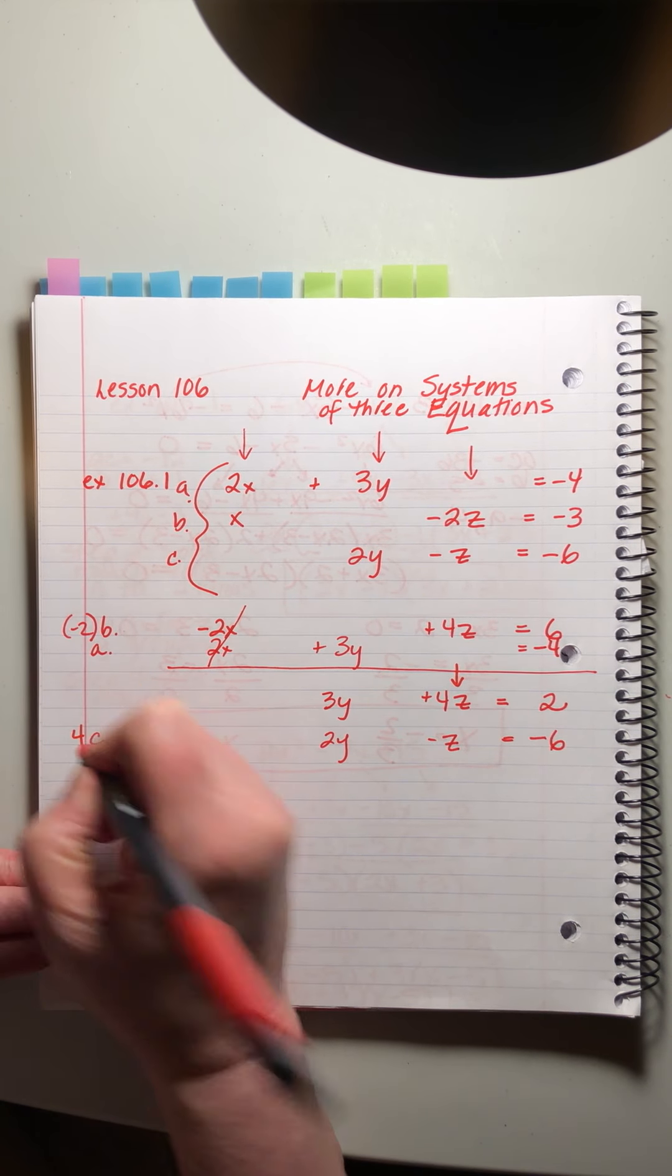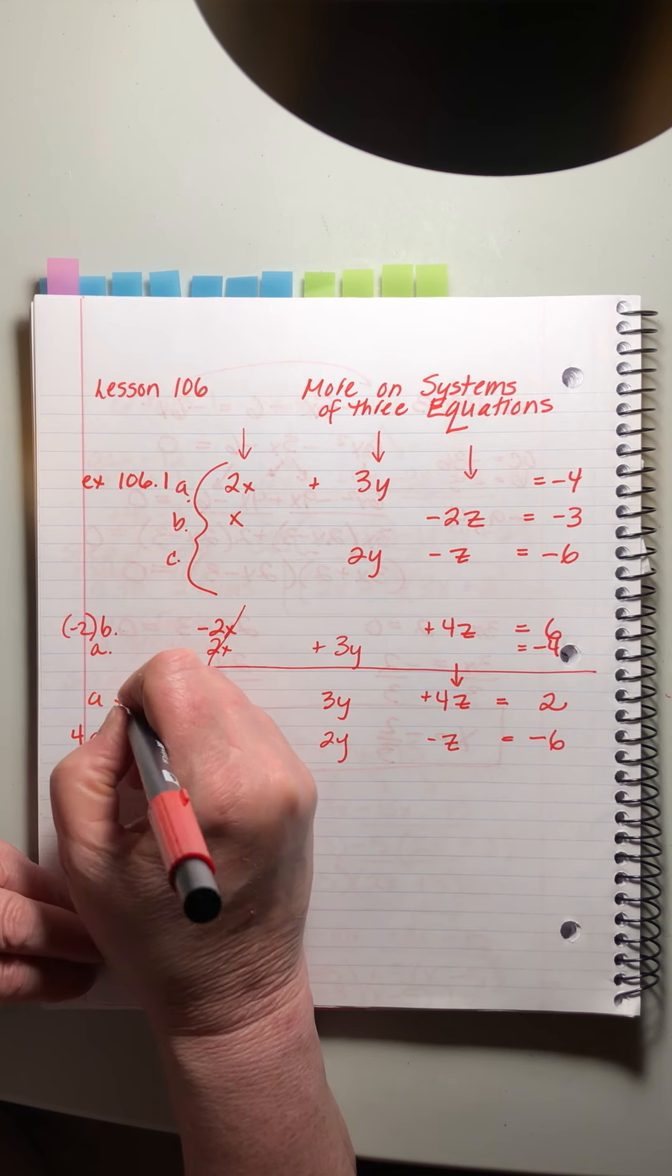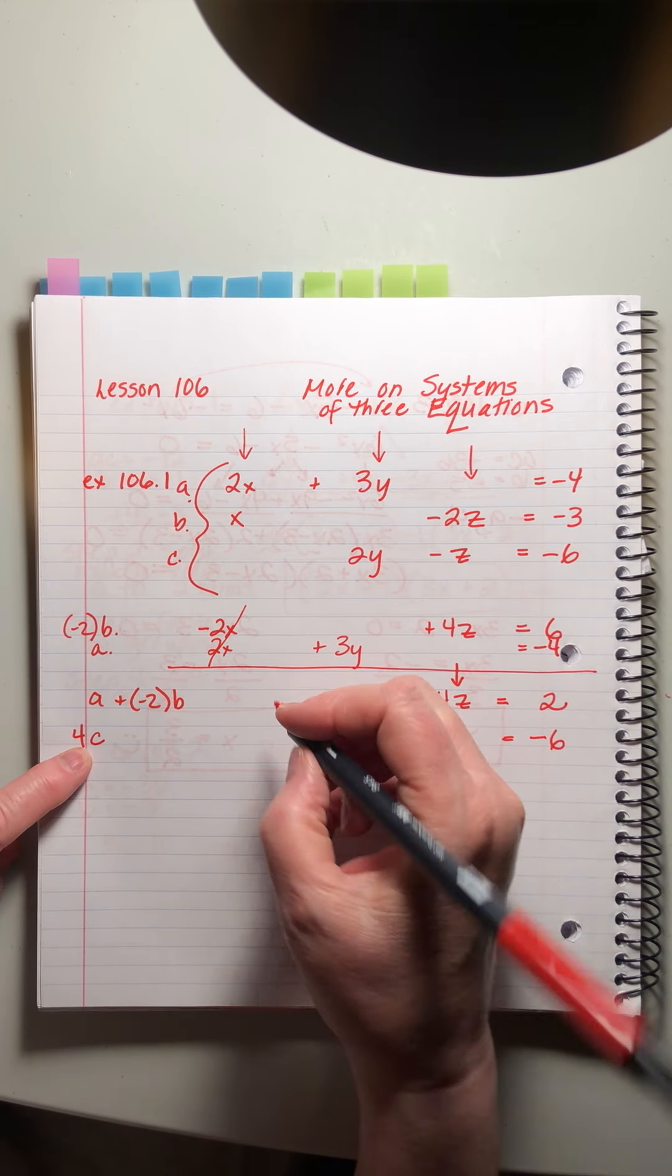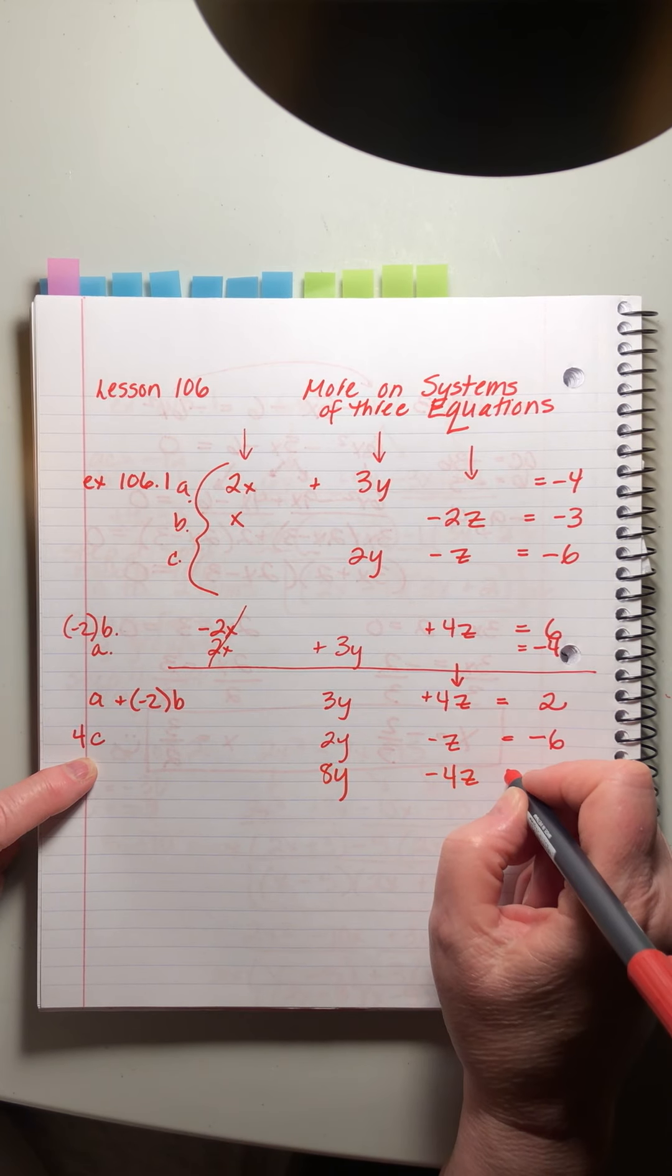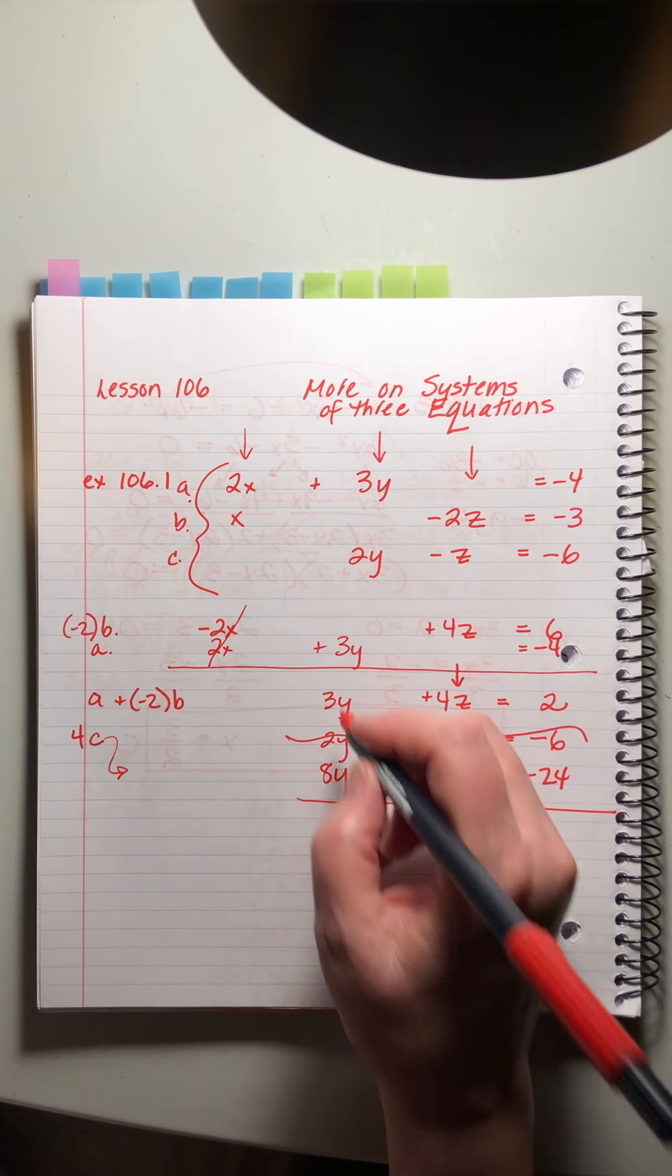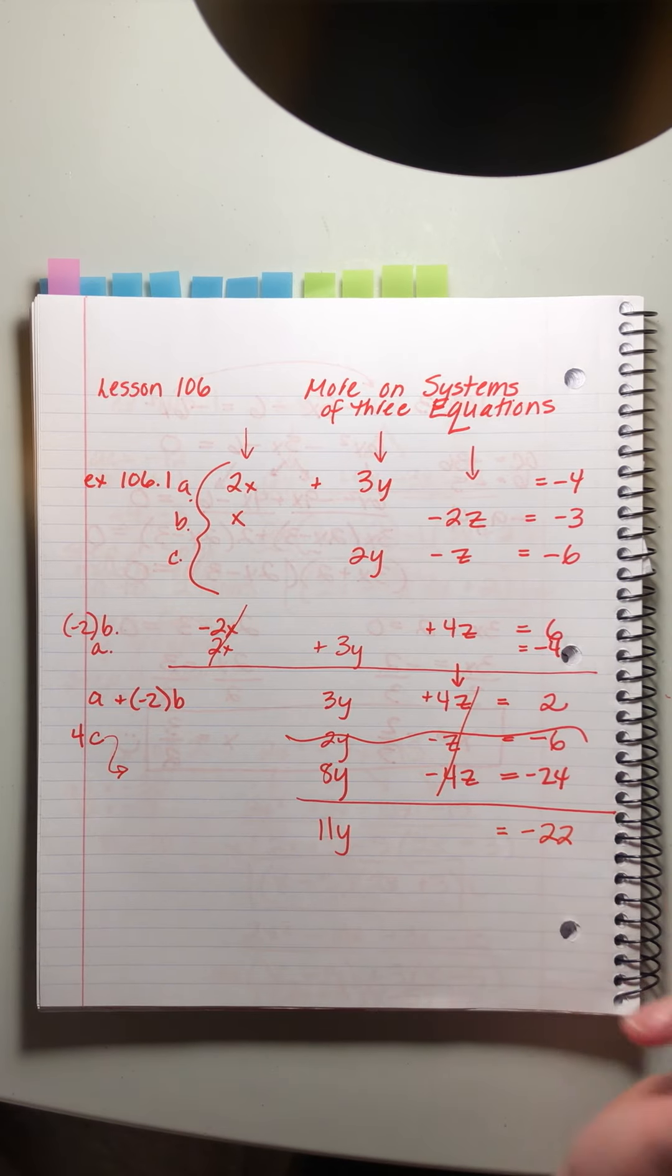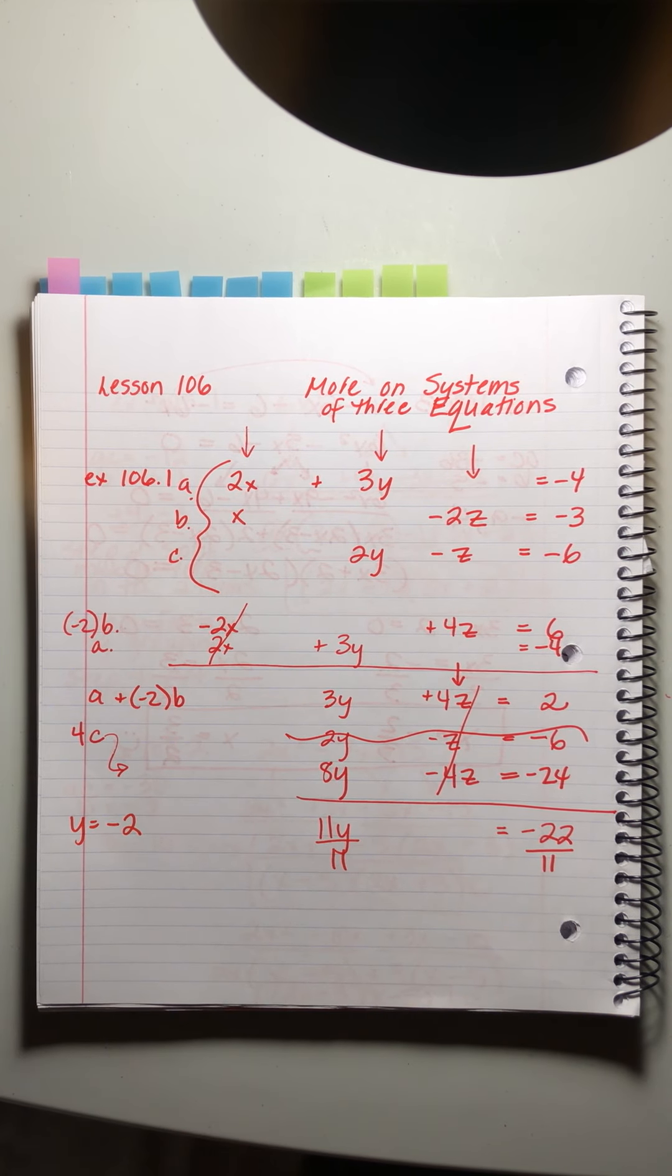So that will become, I'm going to rewrite it just underneath here. This is my A plus minus 2 times B. Now this is going to be 4 times C. 4 times C is going to be 8y minus 4z minus 24. This is 4c actually down here. Now we can add and we get 11y. Oh z's cancel equals minus 22. So we get y equals minus 2. Do you see how cute and fun and like not devilishly hard this is?